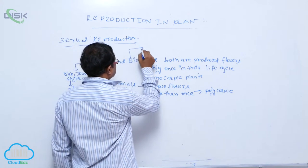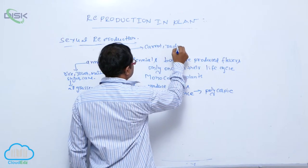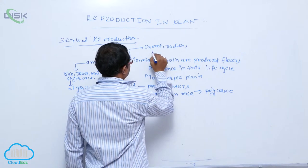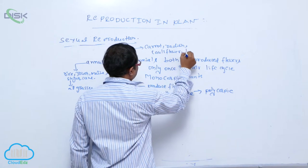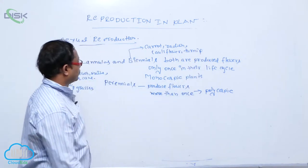After that, biennials: carrot, radish, cauliflower, turnip. These are biennials.